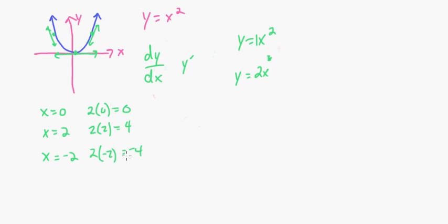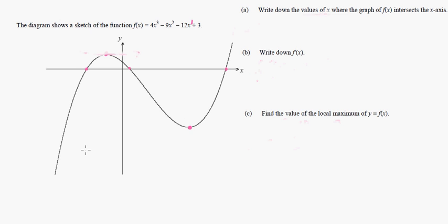Let's move on and do a problem like this and see how they do it on a paper 2 problem. The problem says: the diagram shows a sketch of the function f(x) = 4x³ − 9x² − 12x + 3. Write down the values of x where the graph intersects the x-axis. This is a cubic, so it's going to cross three times.